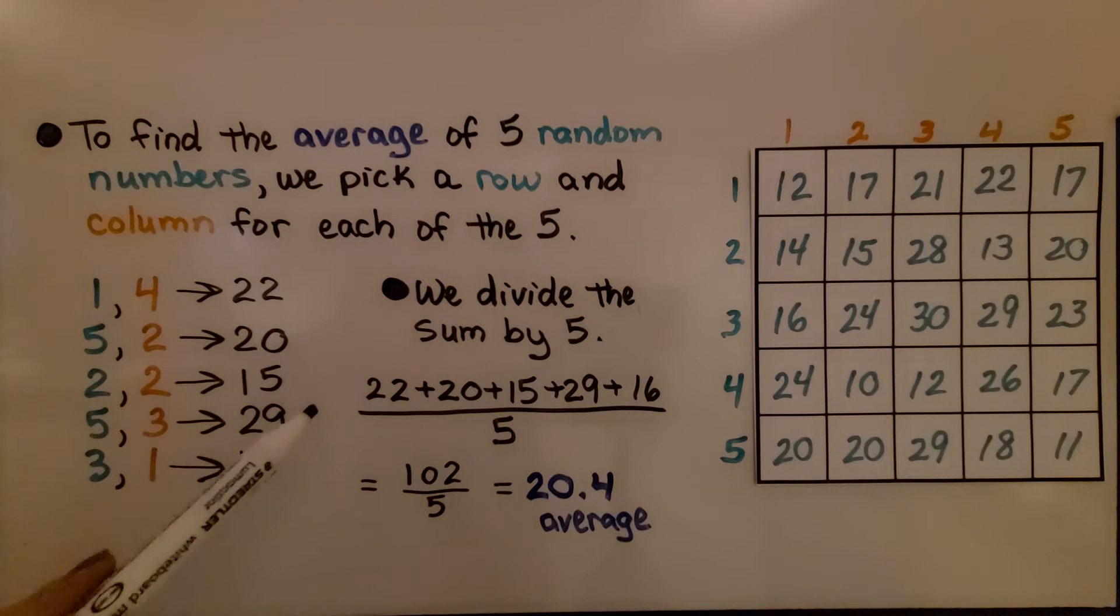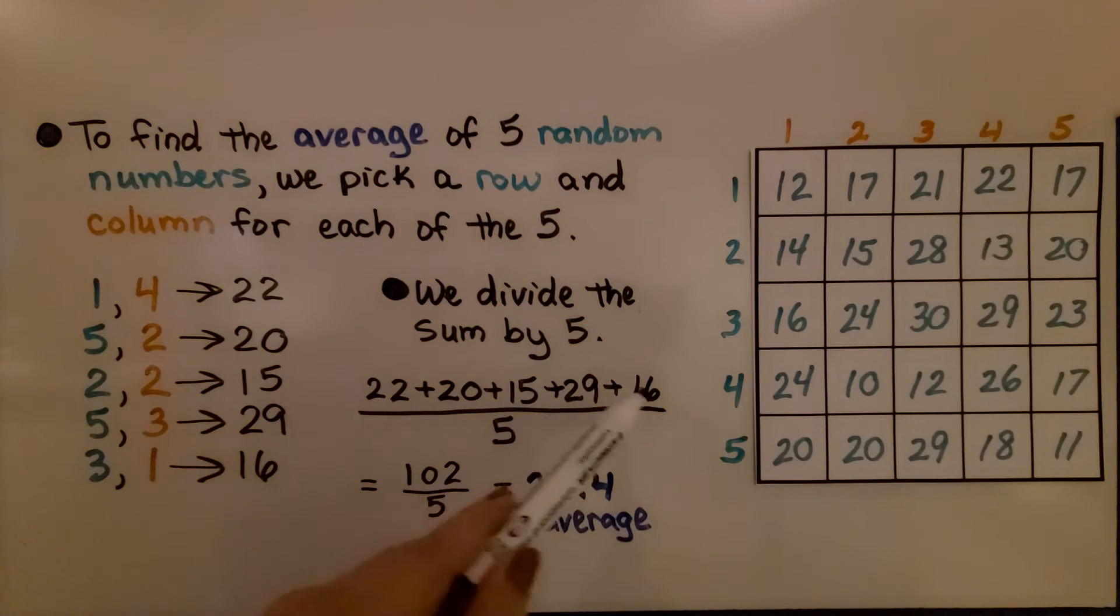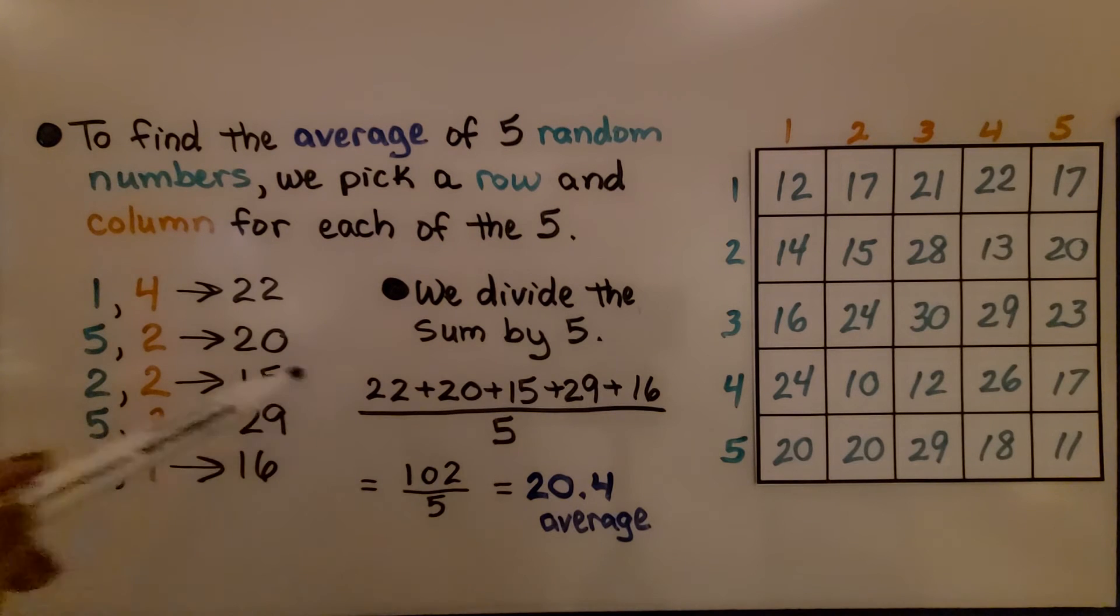Now, to find the average, we divide their sum by five, because we have five numbers that we have as addends. We get 102 divided by five, which is equal to 20.4 for our average.